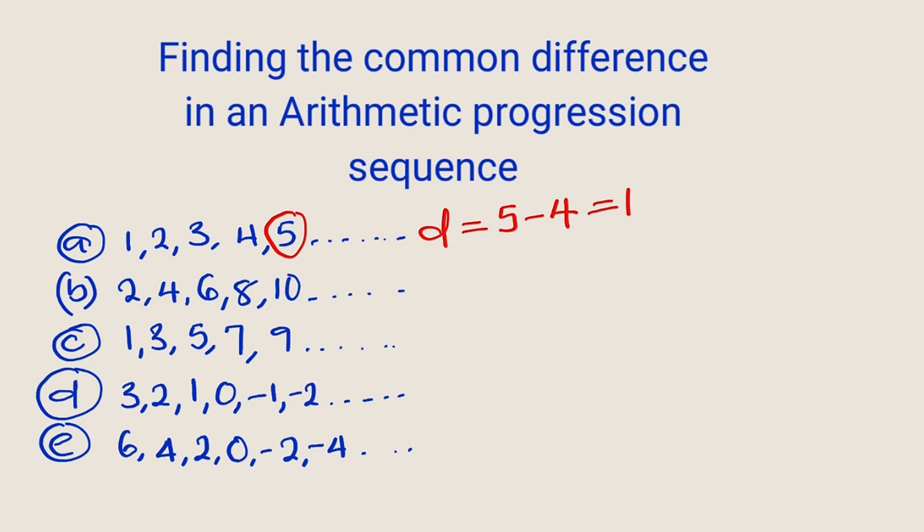Now let us move on to the second one. The common difference can be obtained by taking any term at random. Let me take this one which is six, minus the previous one which is four, and this is equal to two. Therefore the common difference in this sequence is said to be two.